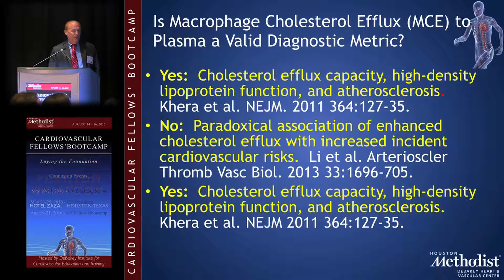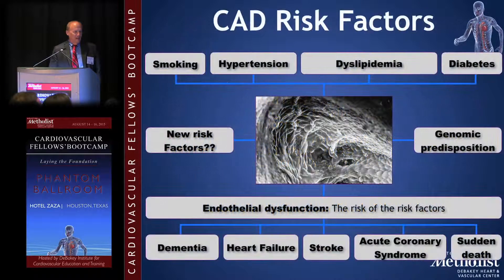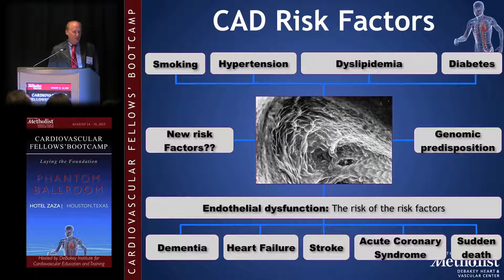Is macrophage efflux a diagnostic metric? Some say yes — this was published in the NEJM — but an ATVB study said it was not predictive. Risk factors for atherosclerosis include smoking, hypertension, dyslipidemia, and diabetes. Genetics are the new risk factors we'd like to identify. These aspects of endothelial dysfunction lead to heart failure, stroke, ACS, and sudden death.